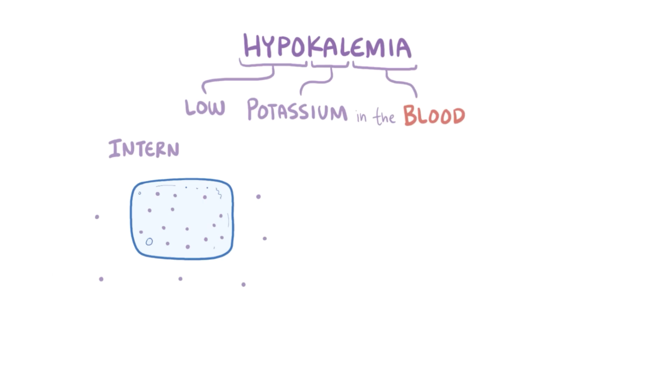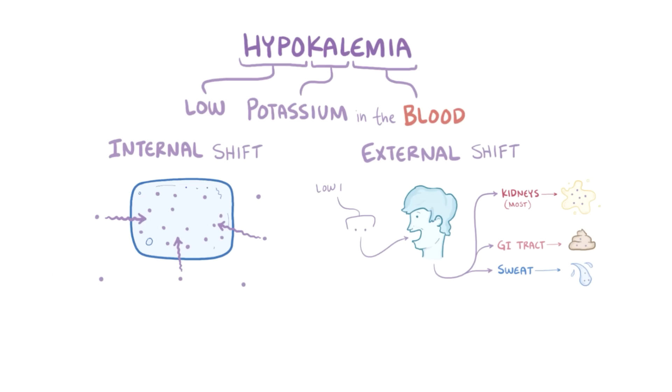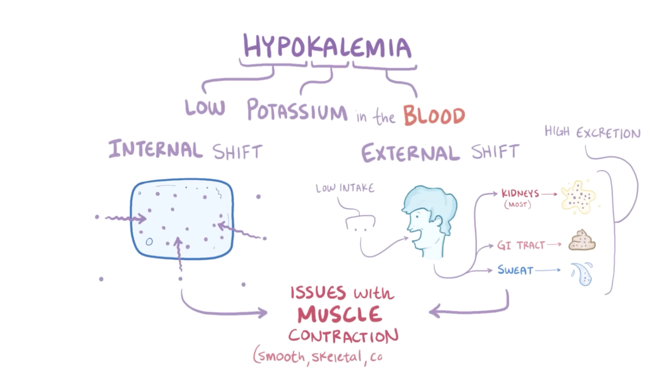Alright, as a quick recap. Hypokalemia describes a low concentration of potassium in the blood, which can be the result of an internal potassium balance shift where potassium moves into the body's cells, as well as an external potassium balance shift having to do with either low intake or high excretion of potassium. Either way, the low potassium levels lead to issues with muscle contractions, which could be smooth, skeletal, or cardiac muscles.